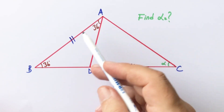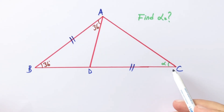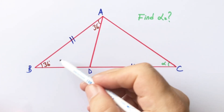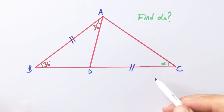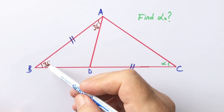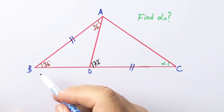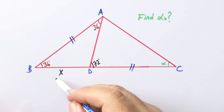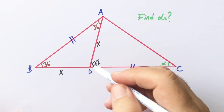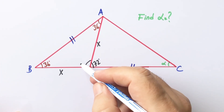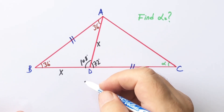In this video we have one triangle where these two sides are equal and these angles are 36 degrees. We know that two interior angles equal one exterior angle. Let's call this side x units — this side is also x — and this angle here is 108 degrees.